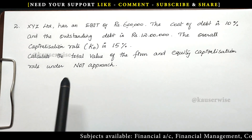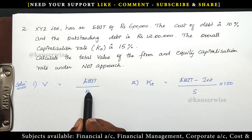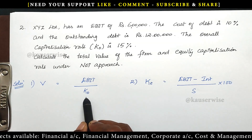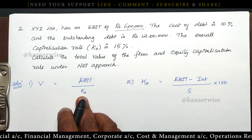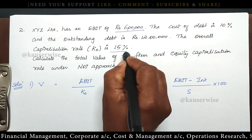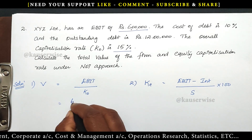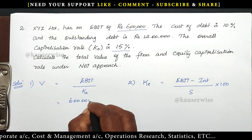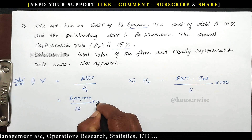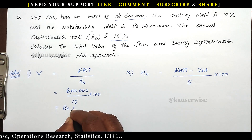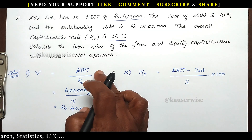To find the value of the firm V, the formula is V is equal to EBIT divided by KO. EBIT is 6 lakhs and KO is 15%. Applying the formula: 6 lakhs divided by 15% equals 40 lakhs. So the market value of the firm is rupees 40 lakhs.